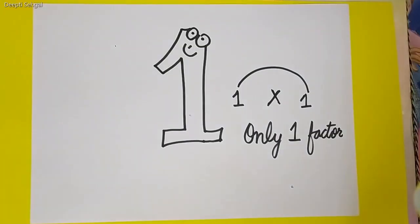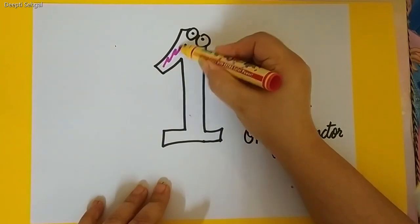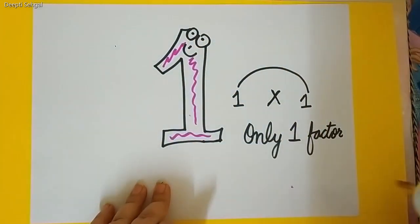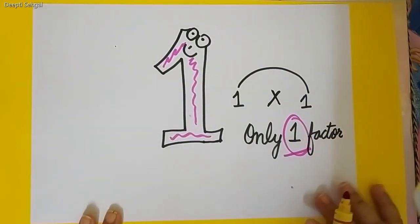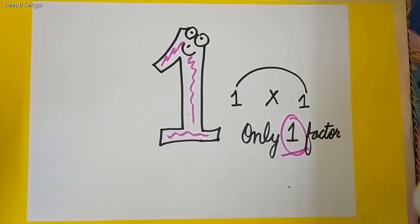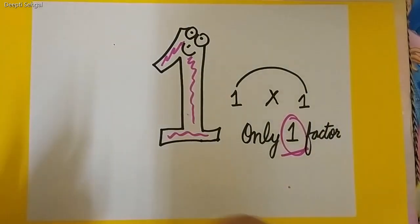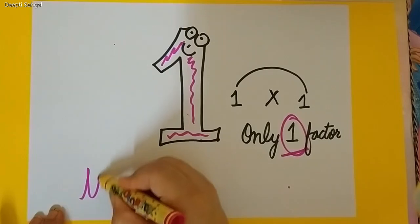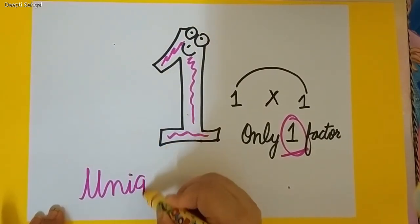What about the number 1? Is it a prime? Is it a composite? 1 says, I have only one factor. Why will I become prime? I do not have more than 2 factors. Why will I become composite? I am a unique number. I am a subset different. I have only one factor. So, 1 says, I am a unique number.